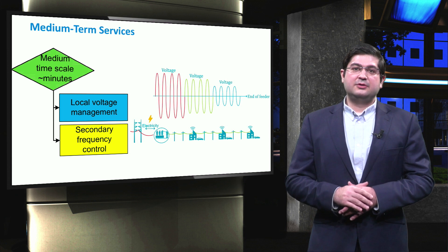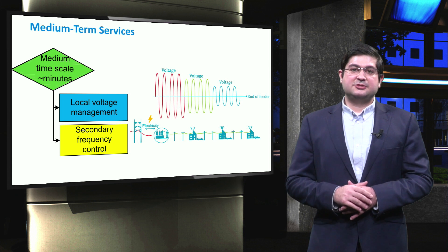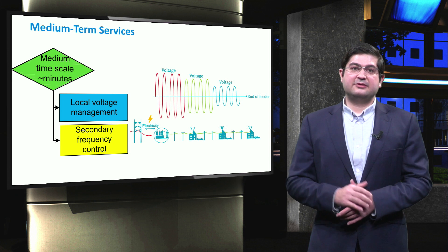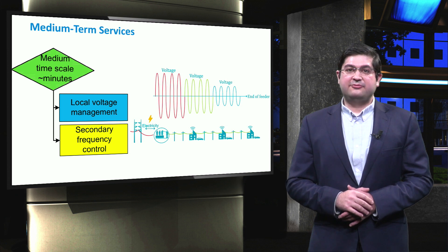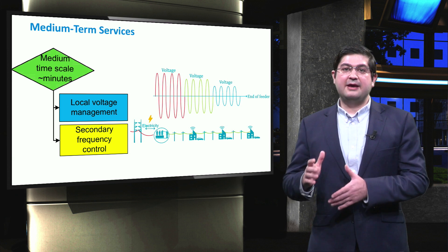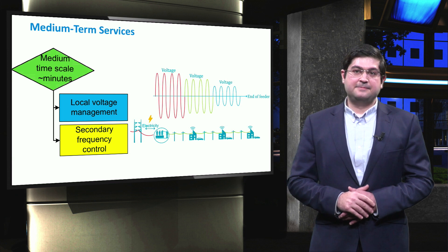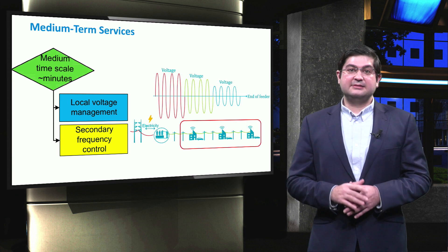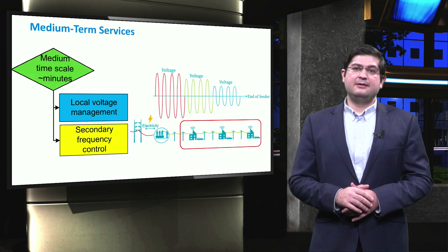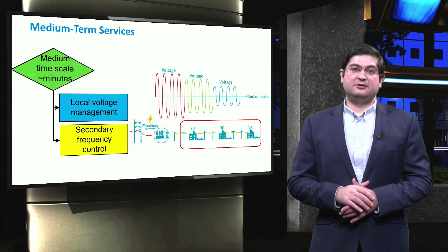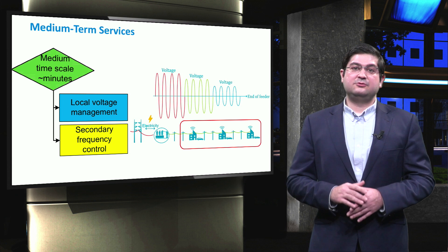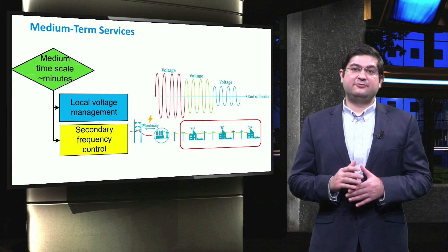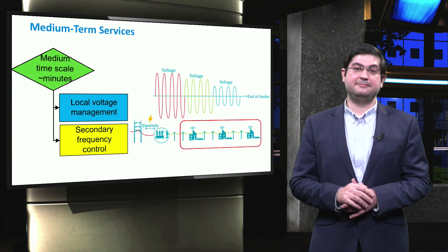The voltage across a low-voltage distribution grid can be managed in such a way that no over-voltage or under-voltage problem occurs. As shown in the figure, typically the voltage across a feeder decreases from the head of the feeder to the end of the feeder due to the voltage drop across the lines. The voltage can be controlled either by the tap changers of the transformers, or by demand side and supply side management across the feeder. Another medium-term example is secondary frequency control, also known as load frequency control or automatic generation control of interconnected power systems. This service is the main responsible for restoring the frequency in the whole system after a disturbance.